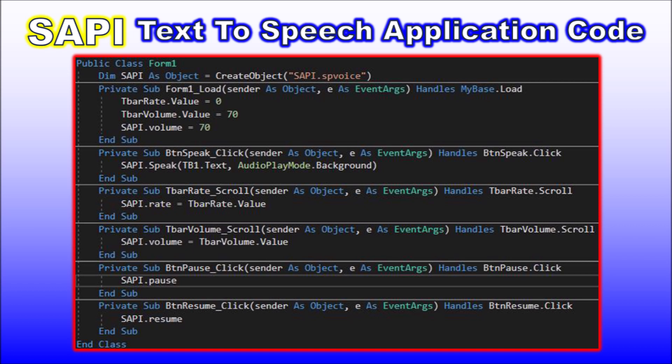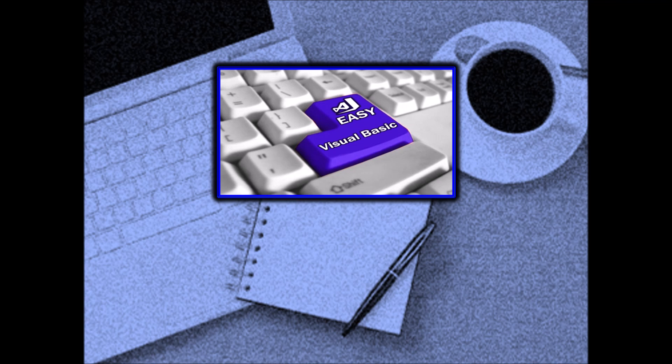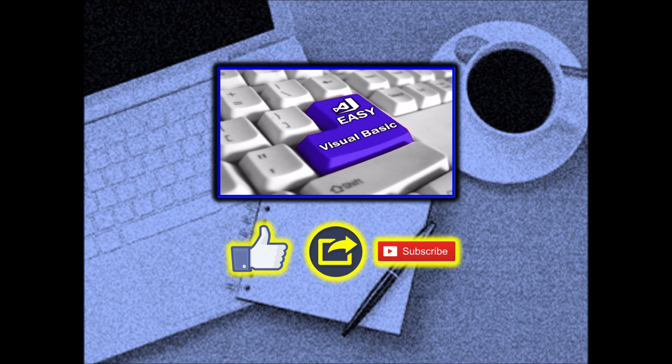There is a bit more to learn on SAPI, but we will cover that in the next Tips and Tricks video. Specifically, in Tips and Tricks 7, we will explain how you can show a list of your PC's installed voices and select a preferred voice from the available list. Thanks for watching. We hope this tip and trick was useful. If it helped you, please like, share, and subscribe.